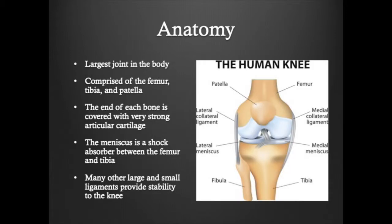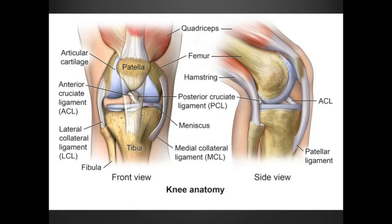The knee is the largest joint in the body. It is comprised of the femur, tibia, and the patella. The end of the bone is covered with articular cartilage, which is the protective covering of the knee. The meniscus is a shock absorber between the femur and the tibia. The knee is a complex joint comprised of bony anatomy and soft tissue anatomy.